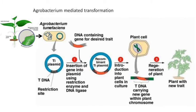Here you can see how Agrobacterium-mediated transformation is possible. First, you isolate Agrobacterium tumefaciens from the tumorous growth of the plant. Then you isolate the Ti plasmid from the Agrobacterium. This Ti plasmid contains a specific region — the T-DNA region — which has a restriction site. You can digest it with the restriction enzyme, and similarly digest the gene of interest containing the desired trait with the same restriction enzyme. Then, using the restriction enzyme and DNA ligase, you insert the gene into the plasmid.